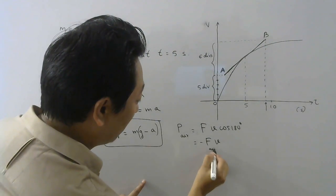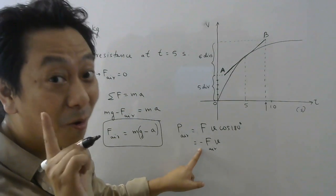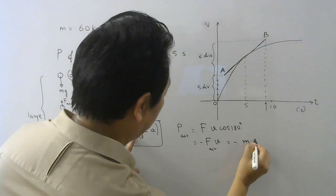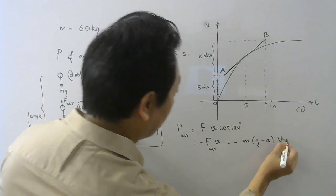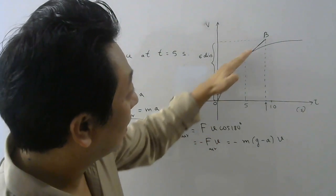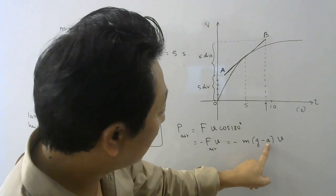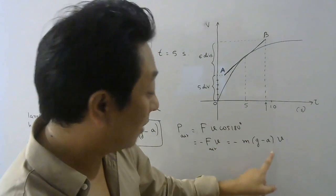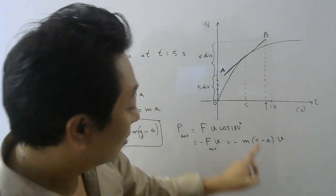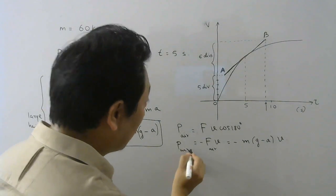Remember the force here should not be mg — we are not calculating power of gravitational force, we are calculating power of air resistance. So that will be minus m(g minus a) times v. From the graph, v is increasing and then becoming constant, and the acceleration — which is the slope of the VT graph — is also changing. Therefore the power will change with time because both v and a are changing.